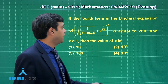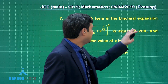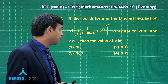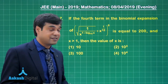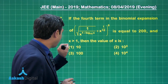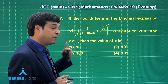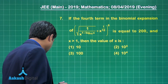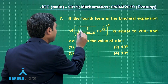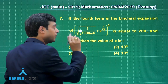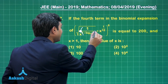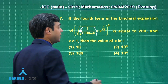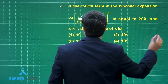Let us take question number seven. If the fourth term in the binomial expansion of this expression is equal to 200 and x is greater than one, then the value of x is. This question has something a bit wrong in it — if we look at the expression and solve with it, the answer we obtain is nowhere in the options. But if I consider the entire thing in power of x, with x not in the denominator, then I am getting some solution. Let us see how we go for it.